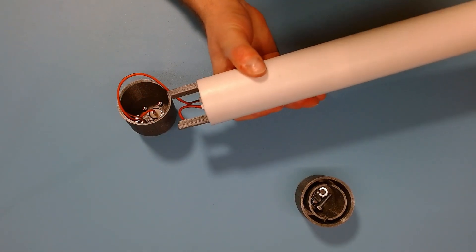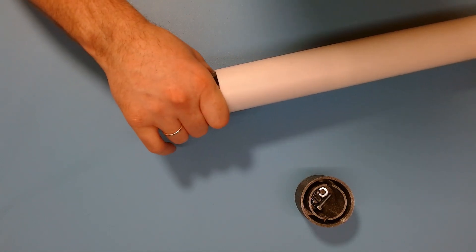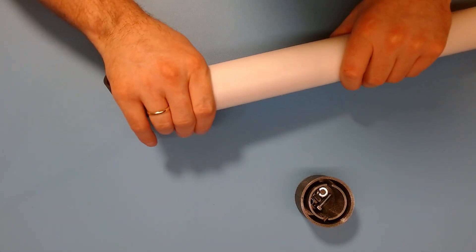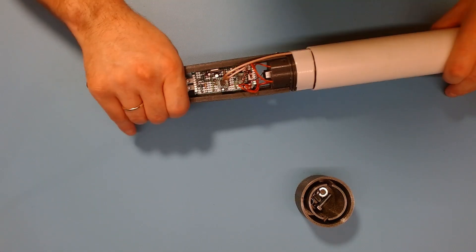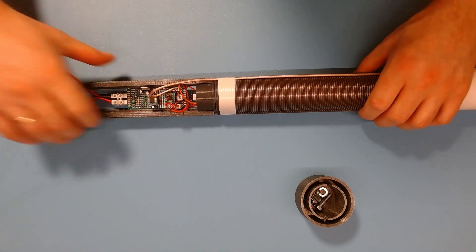By pushing the top we may pull out the contents. What you can now see is the coil and circuit board.